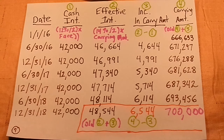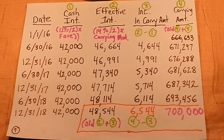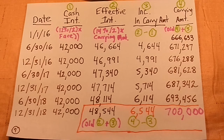In the interest of time, I'm not showing the effective interest method for amortizing a premium — it operates much the same way with a spreadsheet that looks a lot like this. The only difference is that the carrying amount for a premium starts higher than $700,000, so as you're amortizing, you're reducing the premium amount and dropping the carrying amount toward $700,000. With a discount we increase the carrying amount; with a premium we start higher and reduce it down to $700,000.